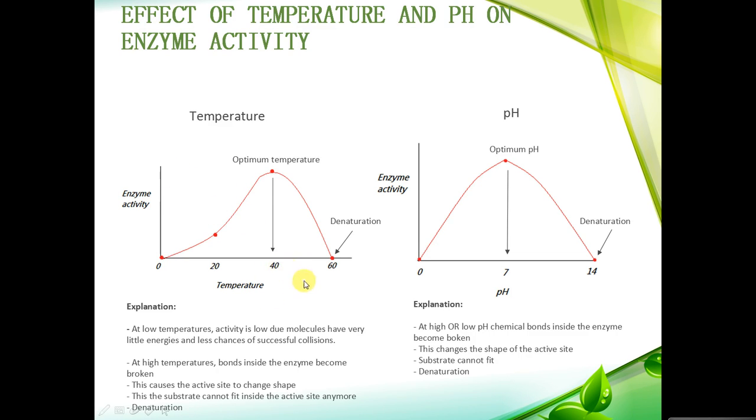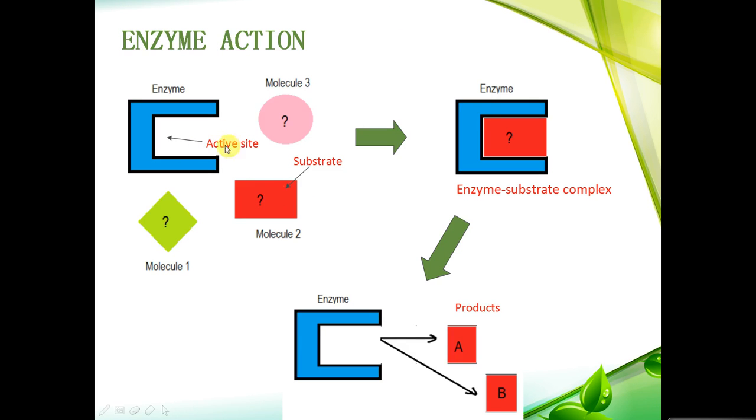When you raise the temperature further than 40 degrees, the enzyme activity starts to decrease, and at high temperatures, bonds inside the enzyme become broken, and this causes the shape of the active site to change. We talked about the importance of complementary shapes. Because this enzyme has an active site that only fits substrate, which is molecule 2, when the active site loses its shape, the enzyme substrate complex won't be able to form, and the products won't form either.